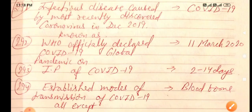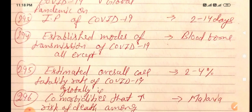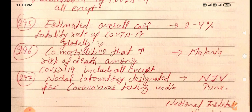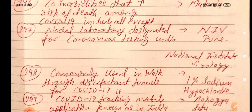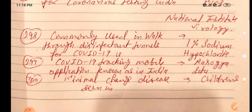Let's discuss very fast as a rapid revision: COVID-19 infectious disease caused most recently December 2019; WHO officially declared global pandemic 11th March 2020; incubation period 2 to 14 days; mode of transmission all except bloodborne; case fatality rate globally 2 to 4 percent; comorbidities all except malaria; nodal laboratory NIV Pune; walk-through disinfectant tunnel 1 percent sodium hypochlorite; COVID-19 tracking app is Aarogya Setu; minimal change disease seen in children.